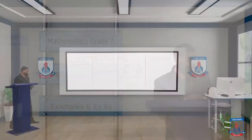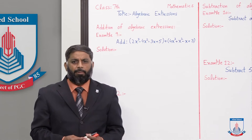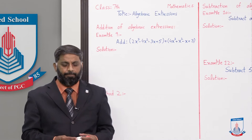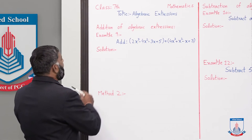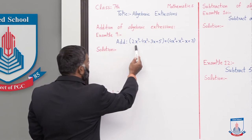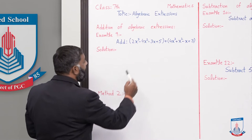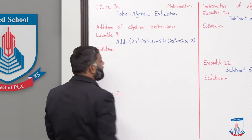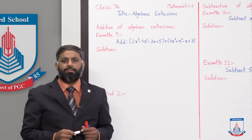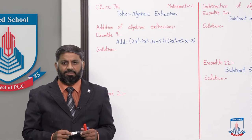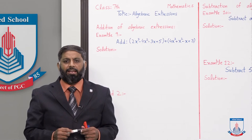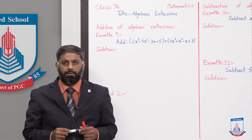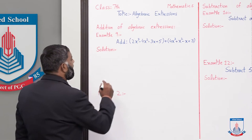Board ki taraf chalte hain. Students, sabse pehle hum addition of algebraic expressions kuch examples ke saath samjhte hain. Example 9 hai: add (2x³ - 4x² - 3x + 5) + (4x³ + x² - x + 3). Is example ko hum 2 methods ke saath solve kar sakte hain.